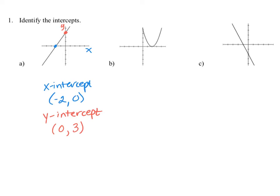In our next graph, we see that the graph touches the x-axis, so we call that an x-intercept, and it also touches the y-axis. Our x-intercept occurs where the graph crosses through the x-axis. In this case, it touches when x is equal to 2 and y is equal to 0. The y-intercept occurs when x is equal to 0 and y is equal to 4.